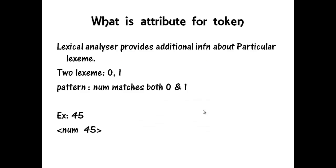What is an attribute for a token? When more than one pattern matches a lexeme, the lexical analyzer must provide additional information about the particular lexeme matched to the subsequent phases of the compiler. For example, the pattern 'num' matches both 0 and 1, but it is essential for the code generator to know what strings are actually matched. Integer constants are constructed by converting numbers to token 'num' and passing the attribute value as its attribute.